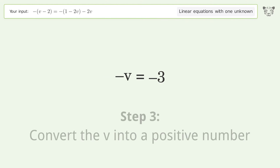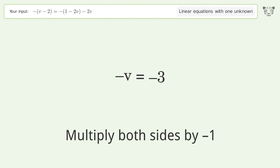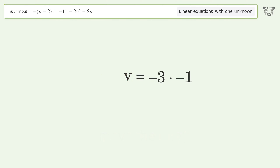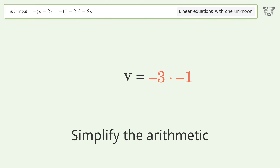Convert v into a positive number by multiplying both sides by negative 1. Remove the 1s and simplify the arithmetic.